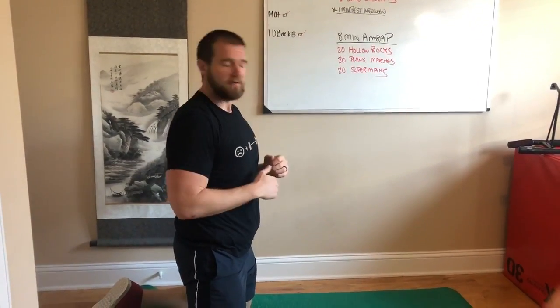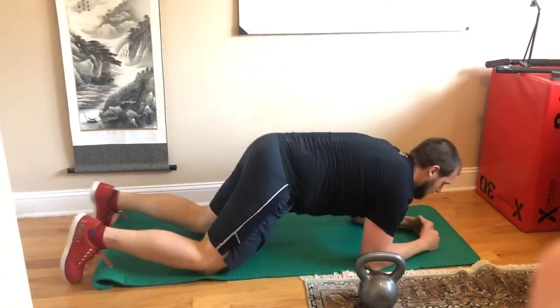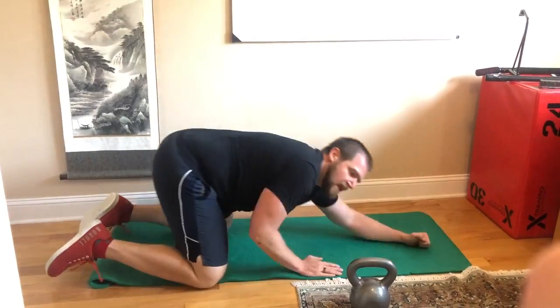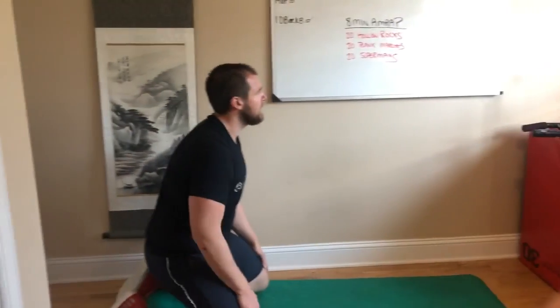Flipping over, 20 plank marches. So we're holding a plank, marching out, touching in front of us just like so, keeping that body and torso as straight as possible.